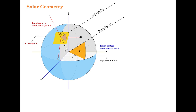These are all the variables used in estimating the insulation at this locality point. There are two coordinate systems: the earth-centric coordinate system, where the important variables are delta the declination and omega the hour angle; and the local-centric coordinate system, where the two important angles are theta-z the zenith angle and gamma-s the azimuth angle.